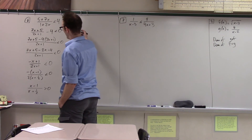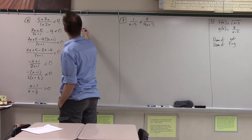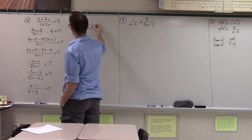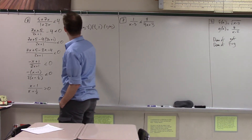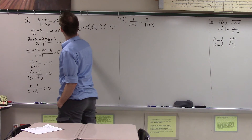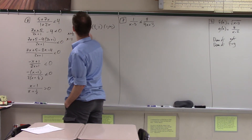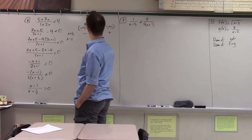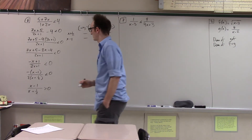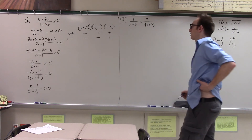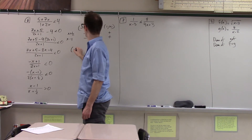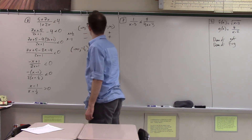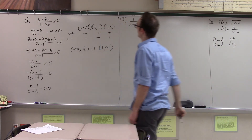When is x minus 1 times x plus one-half positive? I go through the analysis: all numbers from negative infinity to negative one-half, from negative one-half to 1, and from 1 to infinity. x plus one-half goes negative, positive, positive. x minus 1 goes negative, negative, positive. So the product is positive, negative, positive, and the answer is everything from negative infinity to negative one-half, union everything from 1 to infinity.